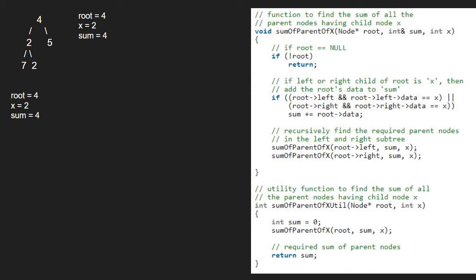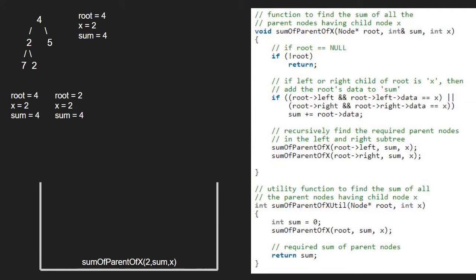So first we pass the left child of 4, which is 2, using a call stack. Again we check if root is null. As it is not, we check if root's left or right data is x. Since 2's left is 7, the first part of the OR statement is not satisfied, but the second part is satisfied. So we add 2 to sum; hence sum will be 6.